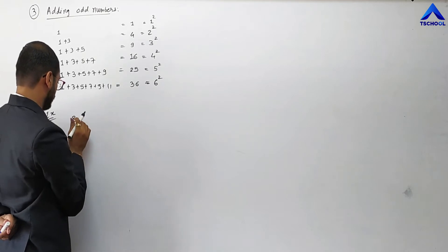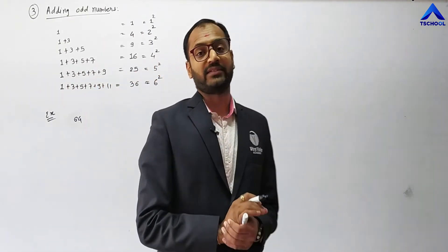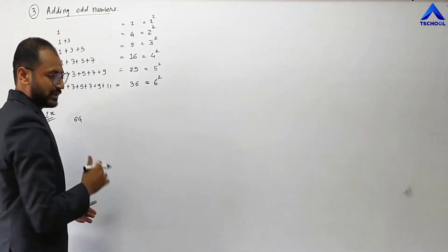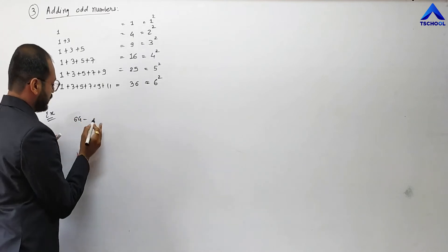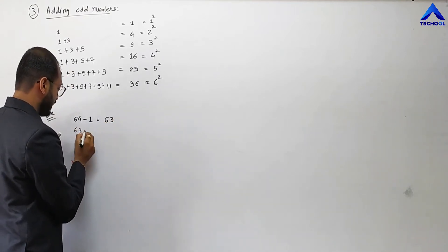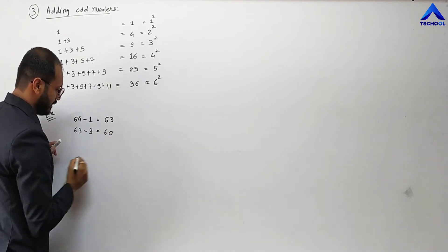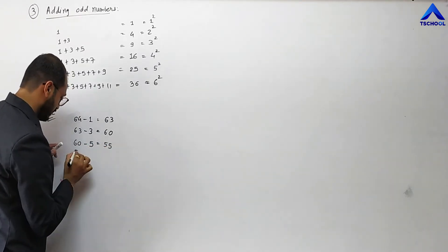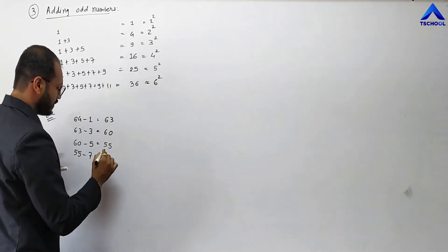64 is a natural number — let me check whether this number is a perfect square or not. We subtract odd numbers sequentially: 64 minus 1 gives 63; 63 minus 3 is 60; 60 minus 5 is 55; 55 minus 7 gives 48; 48 minus 9 gives 39; 39 minus 11 gives 28; 28 minus 13 gives 15; and lastly 15 minus 15 gives 0.